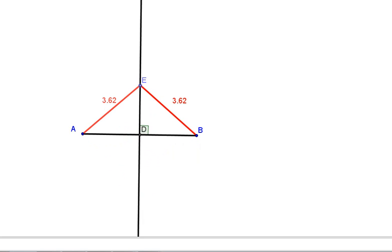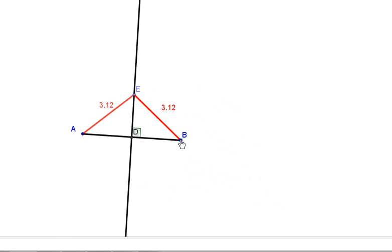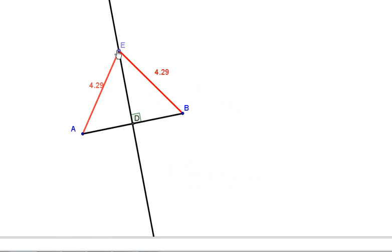No matter how I arrange my line segment, any points on the perpendicular line segment, or the perpendicular bisector, will be the same distance from the endpoints.